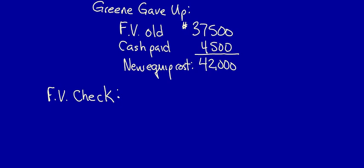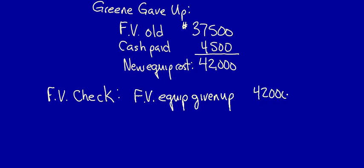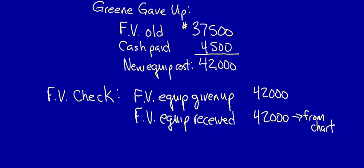We compare the fair value of the equipment given up, which we just calculated as $42,000, and we compare it to the fair value of the equipment received, which we take from our chart as $42,000. These amounts are equal, so a fair value adjustment is not required. We can therefore do the entry.